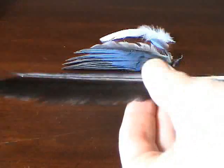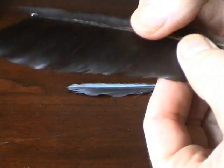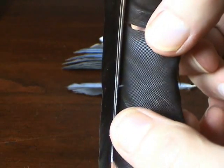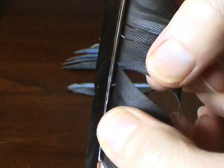The barbs on a feather connect to one another so well that they appear to be a solid sheet. And when you pull them apart, all you have to do to reconnect them is rub them a bit.